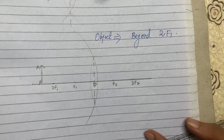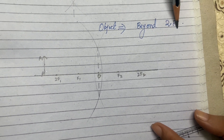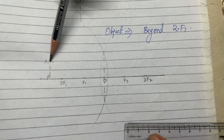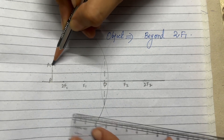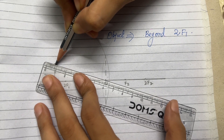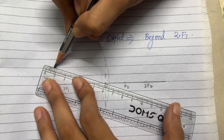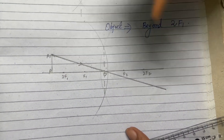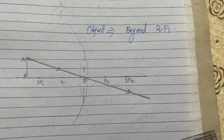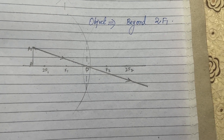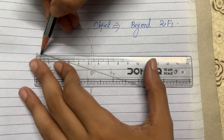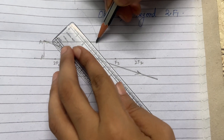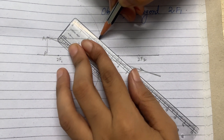When the object is now beyond 2F1 — somewhere here — we need to draw two rays. The first ray passes through the optical center; we know the ray travels undeviated through the optical center. The second ray we draw parallel to the principal axis, and if it is parallel to the principal axis, it will definitely pass through the focus.